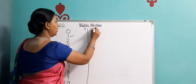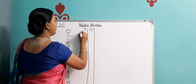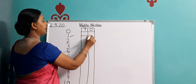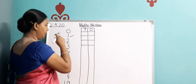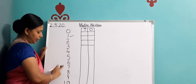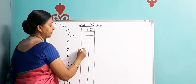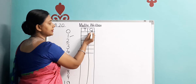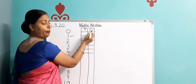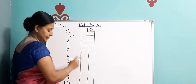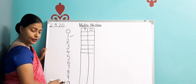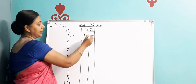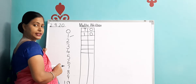This is the 1's column and this is the 10's column. Whenever we write a number, a single digit number will always come in the 1's column. Under O — O means 1's. This is T — T means 10's. So 1 you will bring here to 10's. 1, 0 — it has become 10. Whenever we write any number, we have 10's and 1's columns.